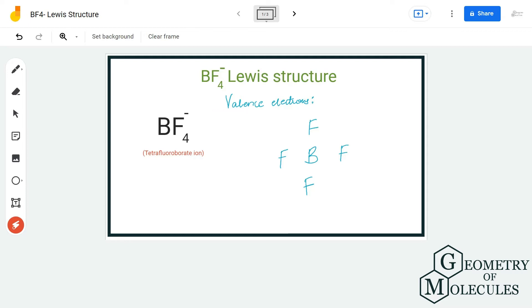Here, boron atom has three valence electrons in its outer shell. Each fluorine atom has seven valence electrons in its outer shell, and there is an additional electron over here because of which this ion has a negative charge. Hence, in total we have 32 valence electrons for this ion.